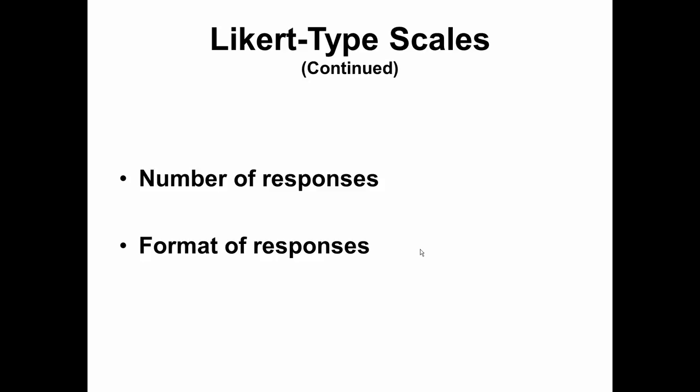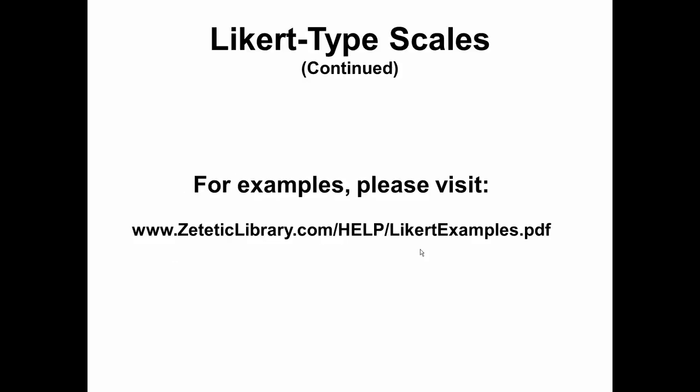In addition to the five-point scale previously shown, there are Likert-type scales ranging from two points to nine points. And in addition to the responses previously shown, there are other types of responses. For examples, please visit www.patheticlibrary.com/help/Likertexamples.pdf.